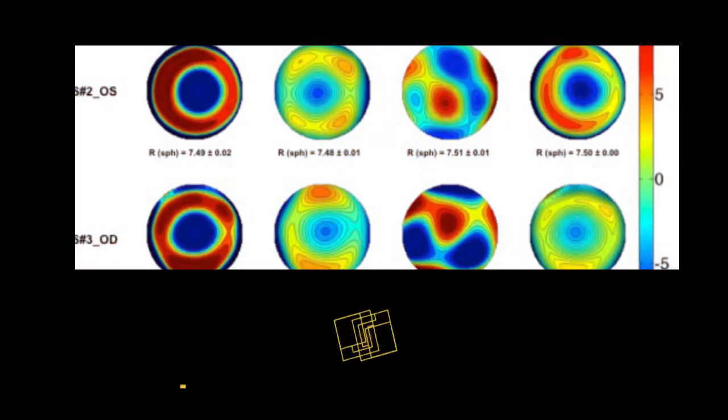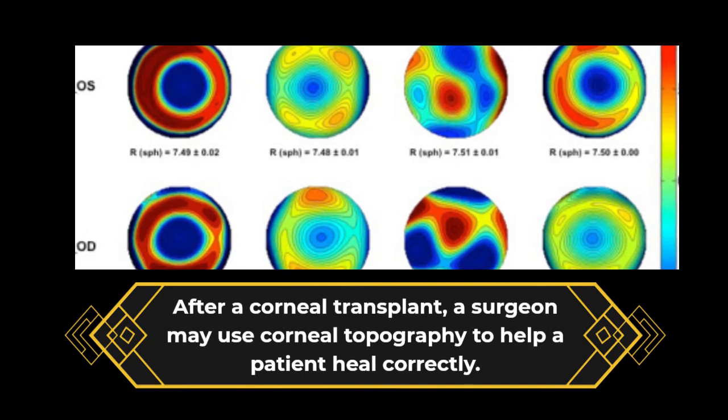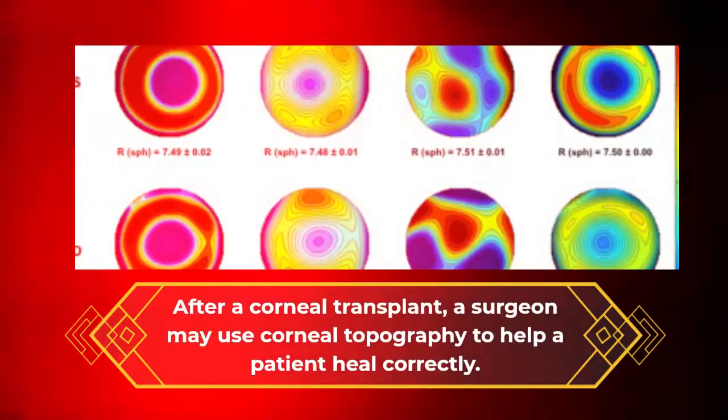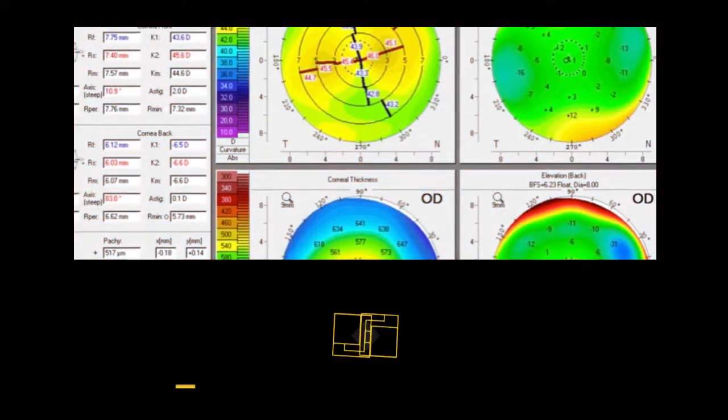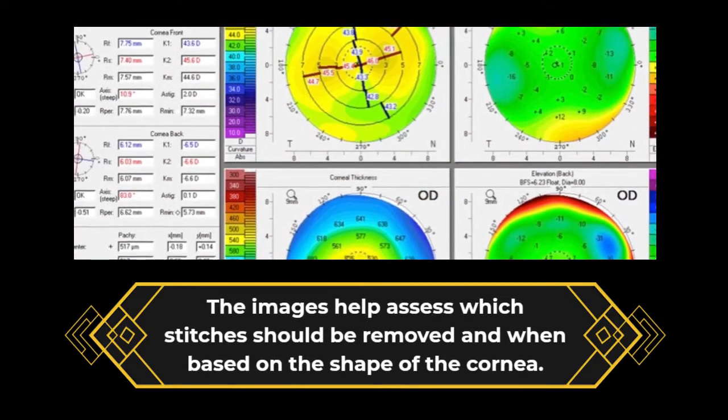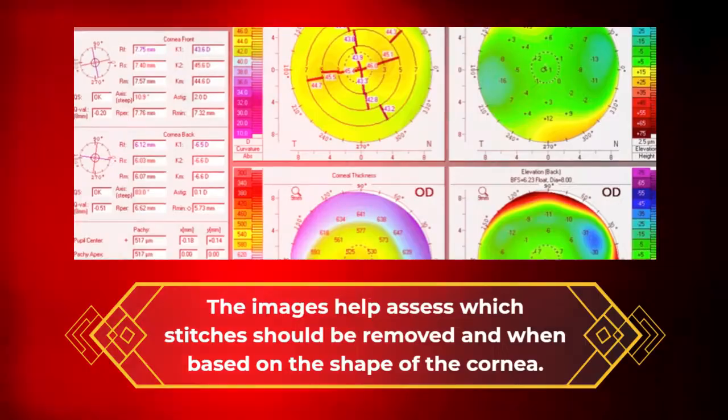Corneal transplants. After a corneal transplant, a surgeon may use corneal topography to help a patient heal correctly. The images help assess which stitches should be removed and when, based on the shape of the cornea.